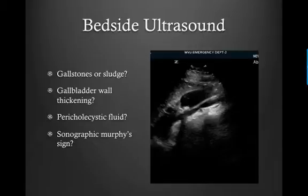The sonographic Murphy sign is something you can determine when you're doing the ultrasound. If, when you're scanning over the gallbladder, the patient has relatively more tenderness than at other places where you're scanning, and if they take a deep breath in and hold it, that's positive for a sonographic Murphy sign.